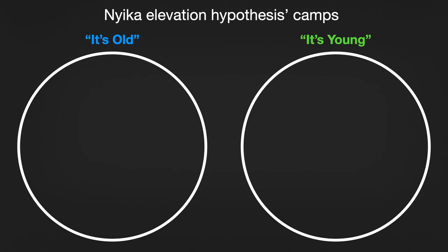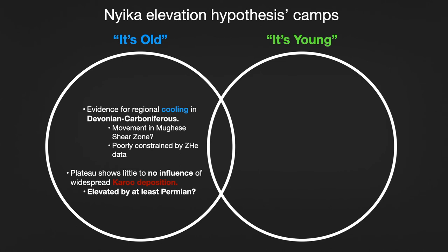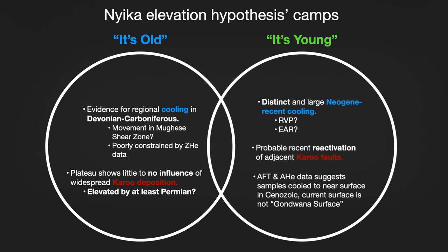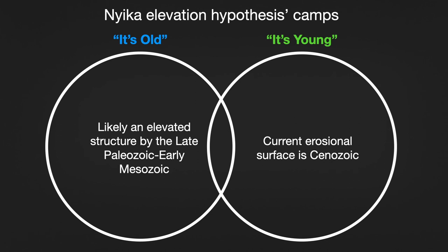So to revisit our two theories — where does this new data fit? Well, it's kind of a bit of both worlds. There's evidence for cooling in the Devonian and Carboniferous; however, that's poorly constrained by the zircon helium ages in the two samples that have them. Given that the plateau shows little to no influence of the widespread Karoo deposition during the Permo-Triassic — as seen in that northern sample off the plateau — this leads us to suspect that the plateau was uplifted by at least this time. In the young camp, there's obvious Neogene cooling likely related to modern-day rifting; however, this is a regional feature and is not confined to the plateau itself. Overall, the data suggests the samples cooled to near-surface in the Cenozoic and does not support the theory of a Gondwana surface. To summarize: Nyika was likely elevated by the Paleozoic to early Mesozoic, but the current surface is Cenozoic.